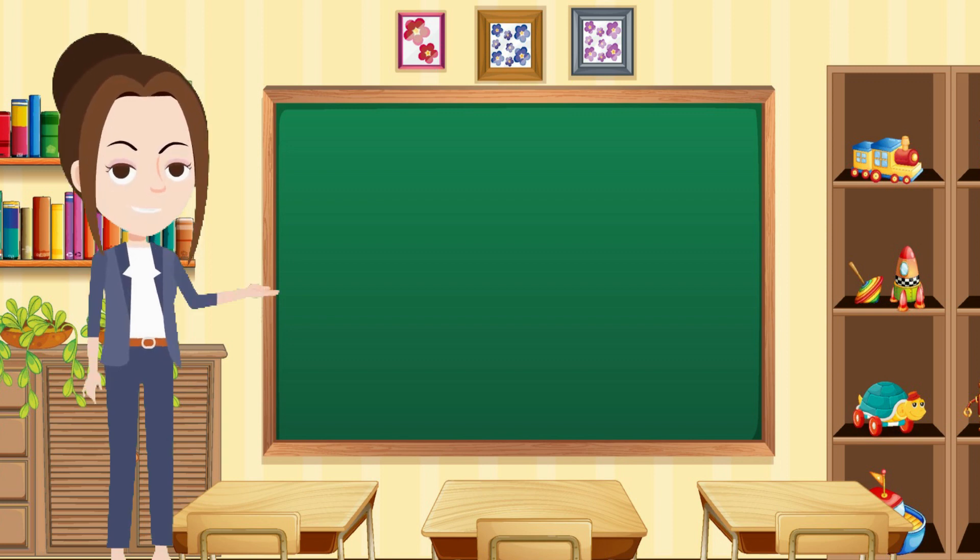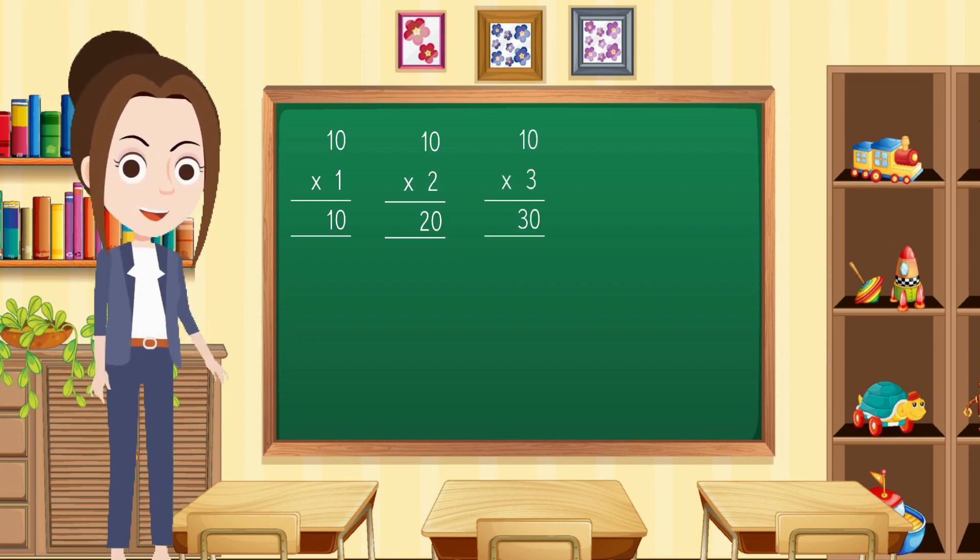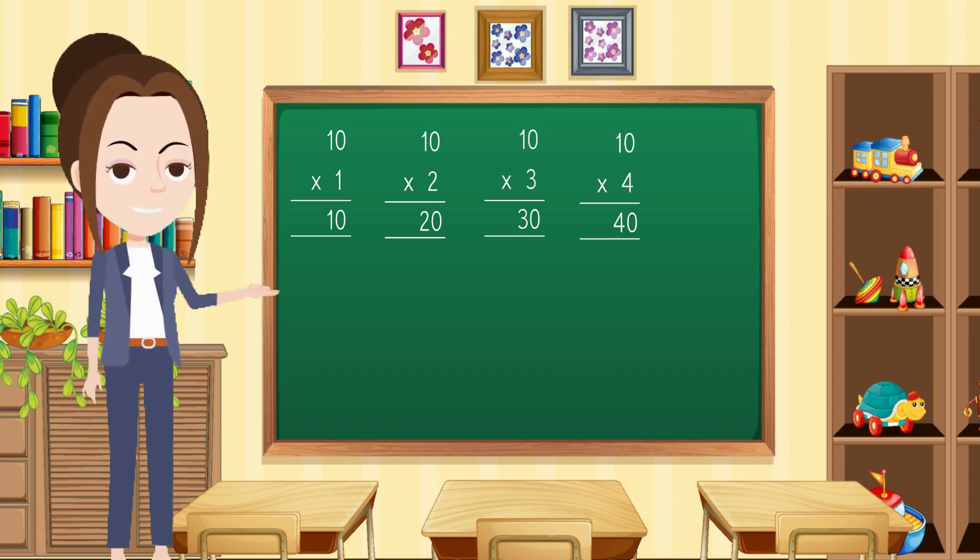Now, we will learn the multiples of 10. 10 times 1 equals 10. 10 times 2 equals 20. 10 times 3 equals 30. 10 times 4 equals 40. 10 times 5 equals 50.